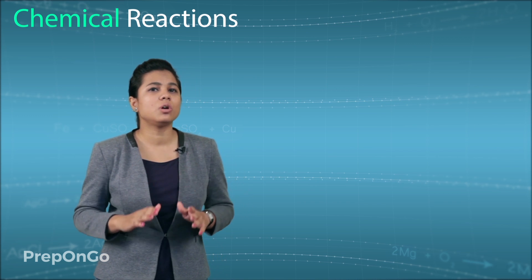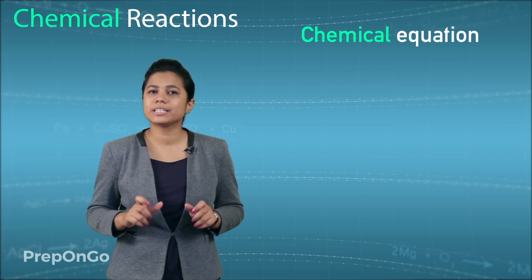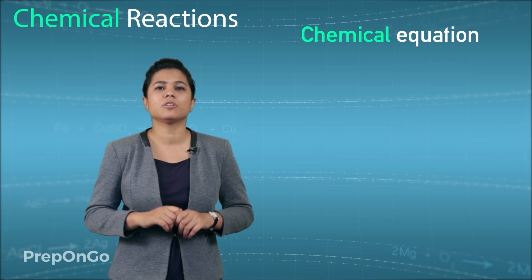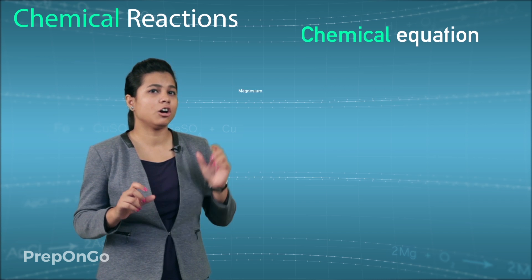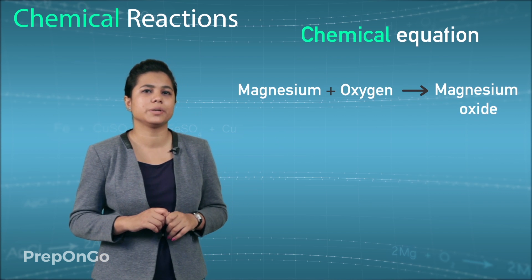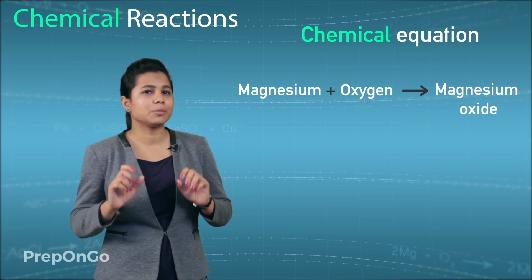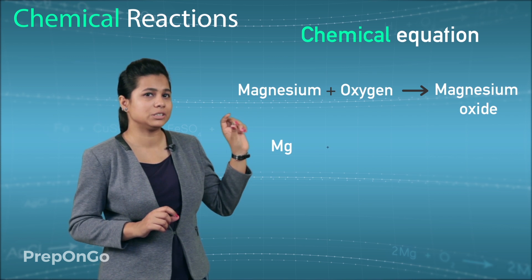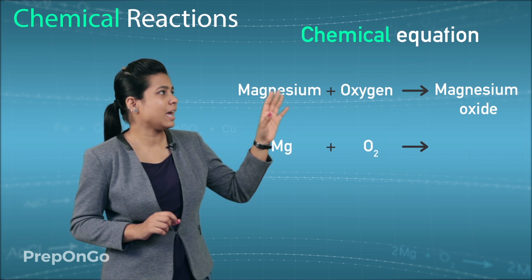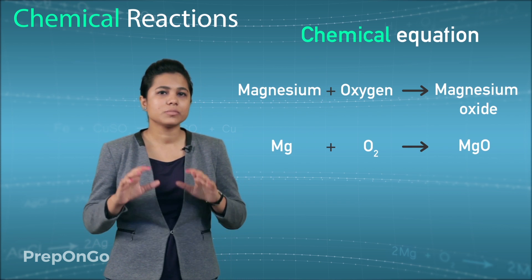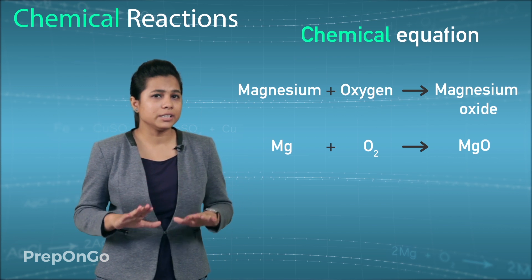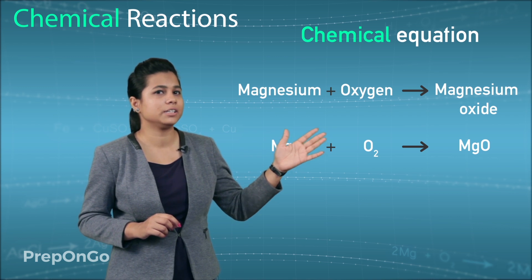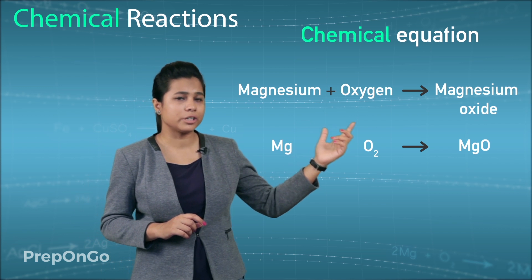Now the second type is the chemical equation, which uses the symbols of different elements learned in ninth class. Taking the same example of magnesium reacting with oxygen to give magnesium oxide, we substitute the words with symbols: magnesium becomes Mg, oxygen becomes O2, and magnesium oxide becomes MgO. The reactants are on the left hand side with a plus sign, the arrow points in the direction of reaction, and the products are on the right hand side.